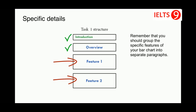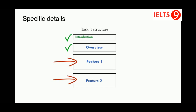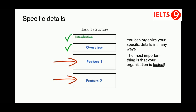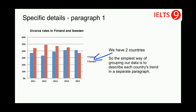Now we have to provide specific details of our bar chart. Remember that you should group the specific features into separate paragraphs. This way your writing will be coherent and you won't lose points for the coherence and cohesion criterion. You can organize your specific details in many ways — the most important thing is that your organization is logical. Ideally, write two or three separate paragraphs.